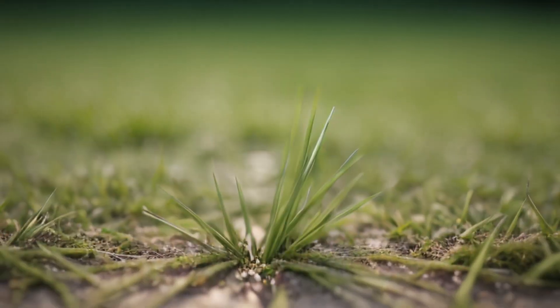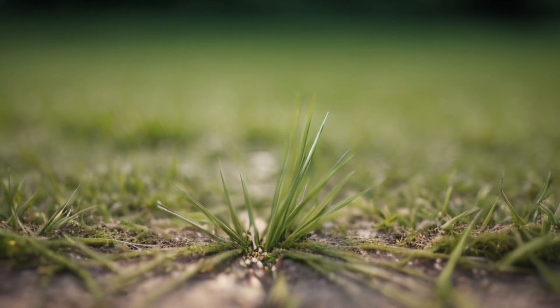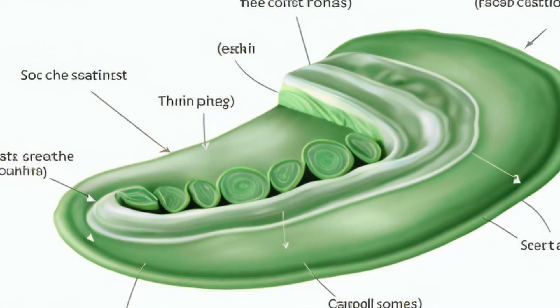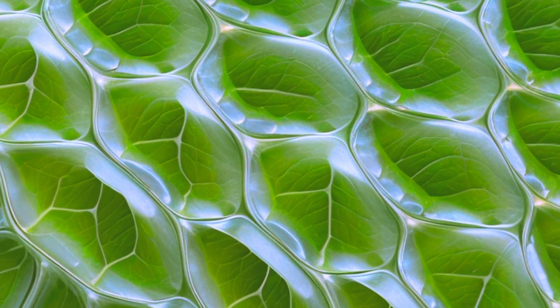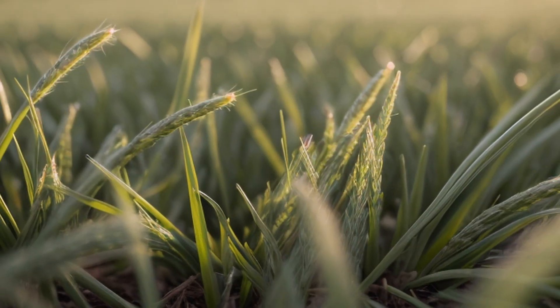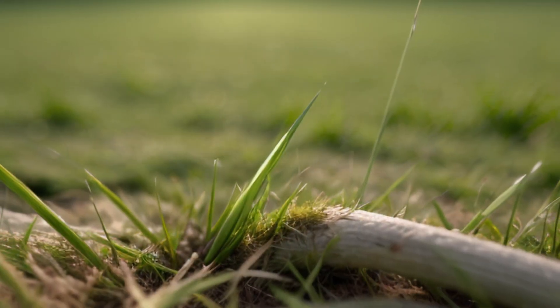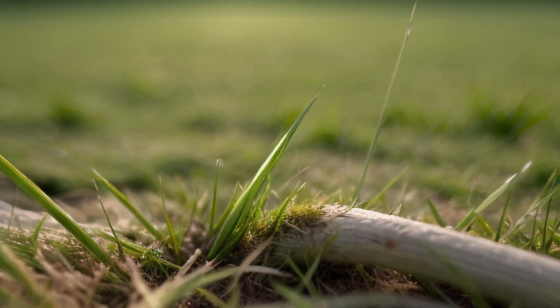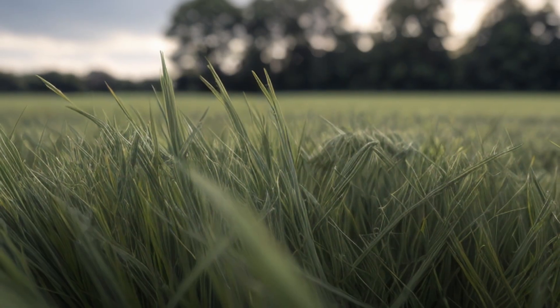Now, chlorophyll comes in different types, and the most common type is chlorophyll A. Chlorophyll absorbs sunlight and uses its energy to convert carbon dioxide and water into glucose, a sugar, and oxygen. The glucose provides the plant with energy,